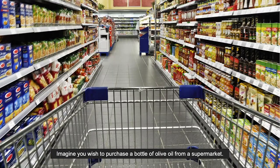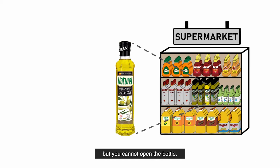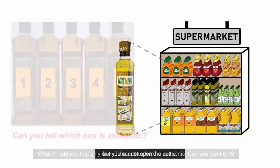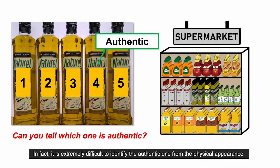Imagine you wish to purchase a bottle of olive oil from a supermarket. As a precaution, you wish to verify the authenticity of the liquid content before purchasing, but you cannot open the bottle. What if I told you that only one of the bottles here is authentic? Can you identify it? In fact, it's extremely difficult to identify the authentic one from the physical appearance.